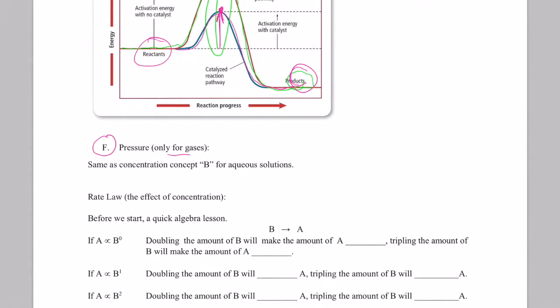Finally, the last factor is pressure, and this only applies to gases. Increasing the pressure squishes molecules closer together, in effect increasing their concentration. If you increase the volume and expand the container, you decrease the pressure, so molecules are farther apart—in effect decreasing their concentration. Changing the pressure affects the rate of a reaction only for gases, and it works the same as changing the concentration of solutions.